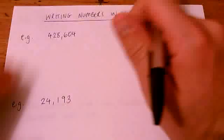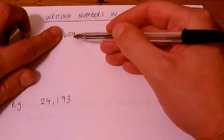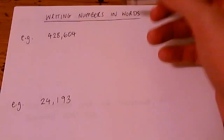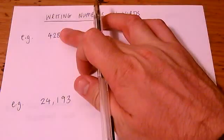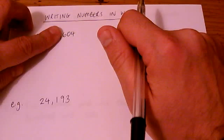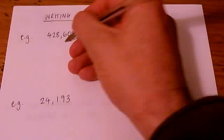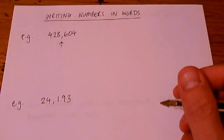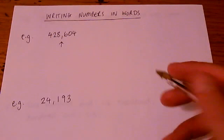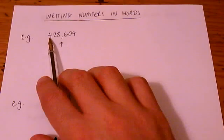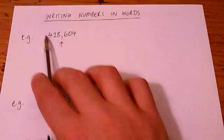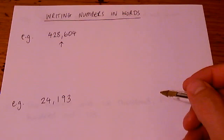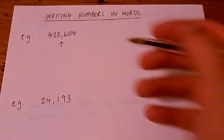428, and then this bit here is a 604. And what I'm going to show you is how to combine those two numbers, 428 with 604. And we're going to put another word in there, where that comma is, to indicate the total size of this number.